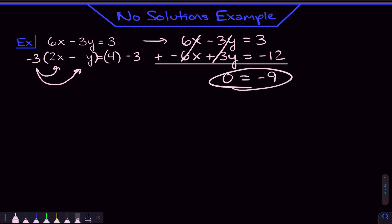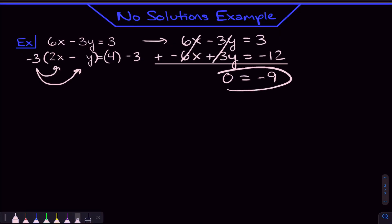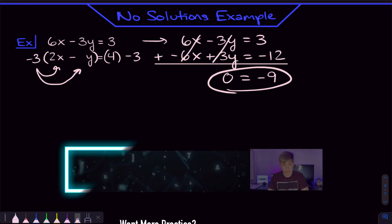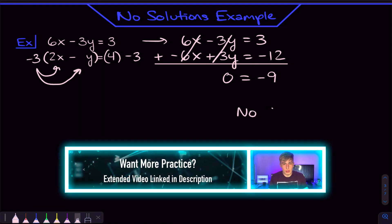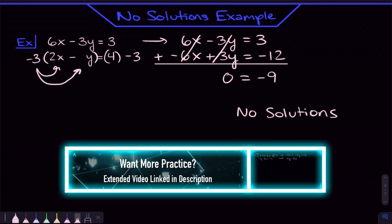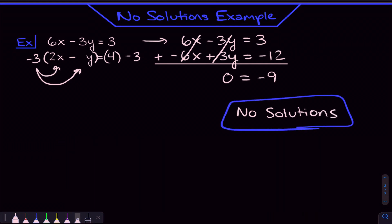That is definitely an issue — we've lost our X's and Y's. When you lose your X's and Y's, you know you either have no solutions or infinite solutions. The deciding factor is whether the two numbers you're left with equal each other or not. In this case, 0 is not the same thing as negative 9, so we know we have no solutions here.